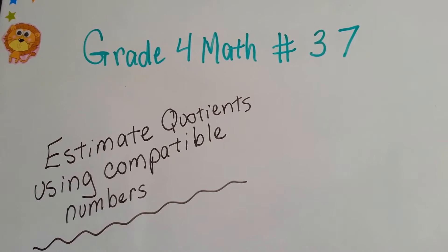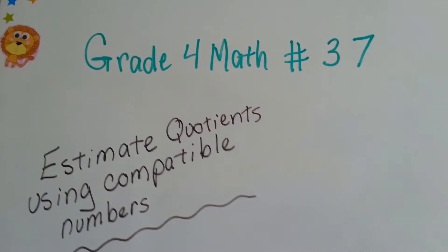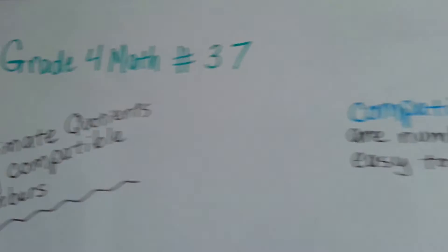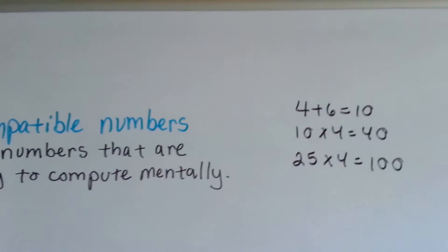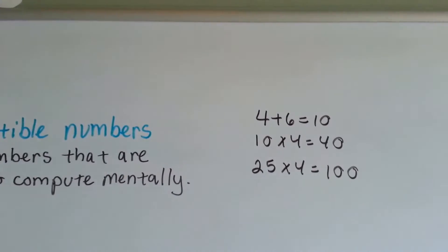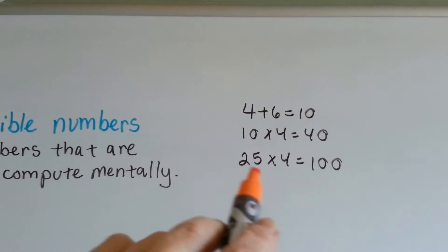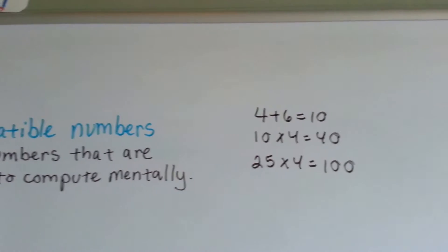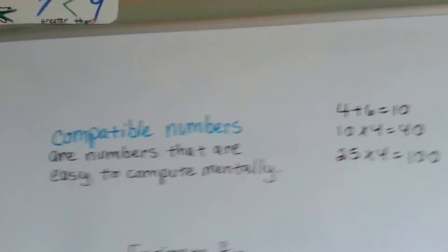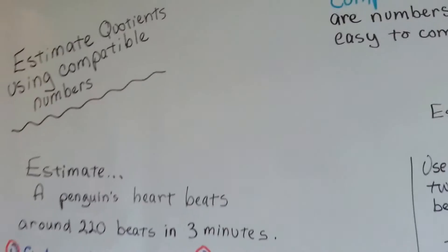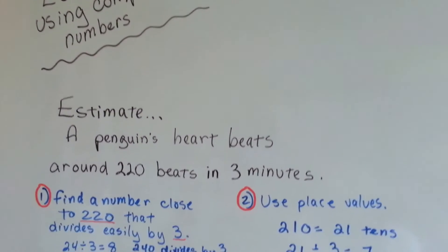Grade 4 math number 37: estimate quotients using compatible numbers. Do you remember what compatible numbers are? They're numbers that are easy to compute mentally. It's like 4 plus 6 is 10, or 10 times 4 is 40, or that there's 4 quarters in a dollar — 25 times 4 is 100. Those are compatible numbers that are easy to do in your head. So we can estimate the quotients, the answers to division problems, using compatible numbers.